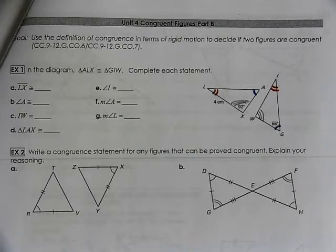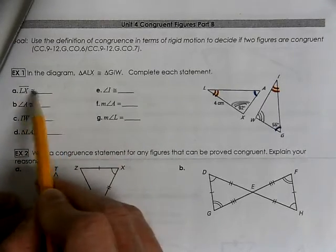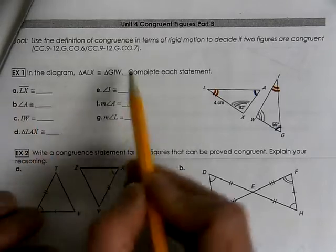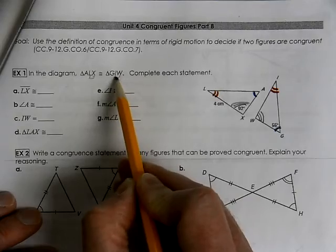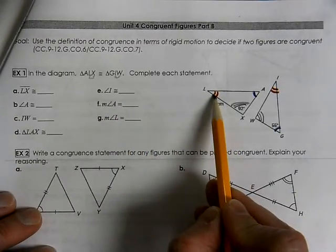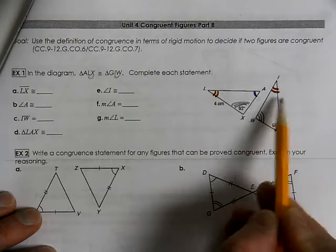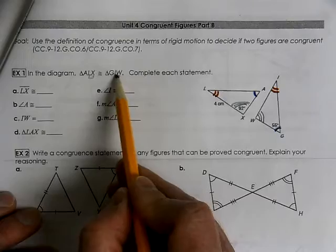So that could help us. When we talk about what are the corresponding parts, LX, where LX is the last two letters, we're going to use the last two letters. Or you could think about it as from the red to the gray, from the red to the gray, IW.